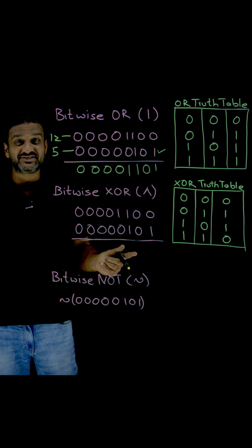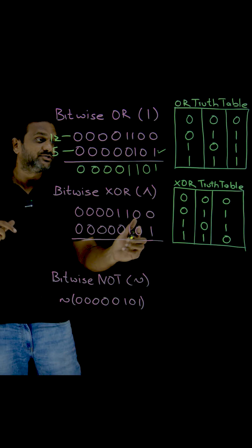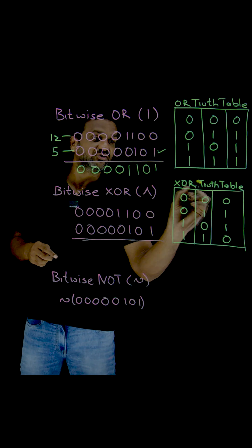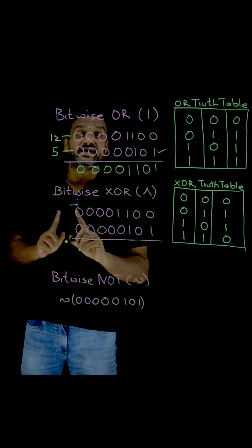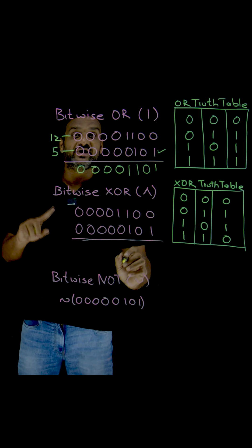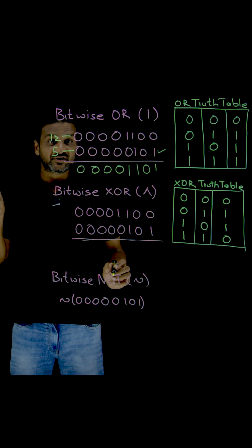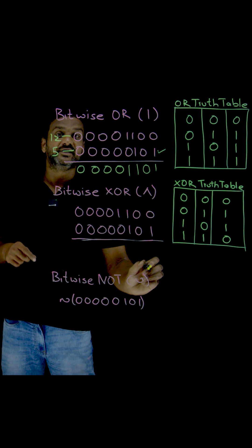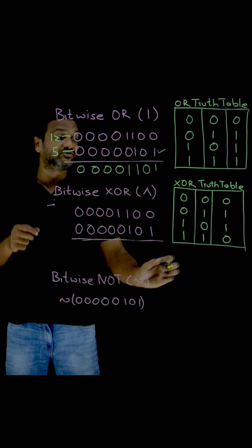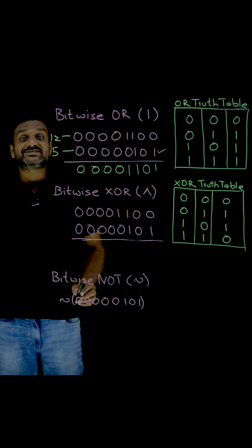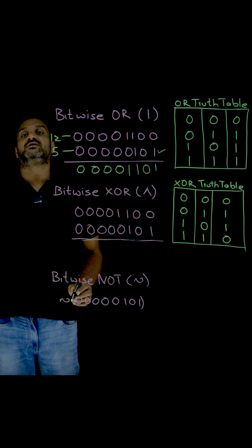This is logically a very strong point. Zero, zero — both are same, so it produces an outcome of zero. Zero, one — they are different, so one. One, zero — again, both bits are different, so it produces an outcome of one. One, one — it produces an outcome of zero because both are same. That is what we call exclusivity — exclusive OR.